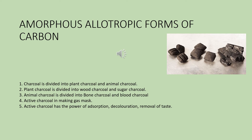Active charcoal: with special treatment, when absorbed hydrocarbons and layers of graphite are removed from the surface of charcoal, the porosity of charcoal increases greatly, and its capacity of absorbing gas increases. This type of charcoal is called active charcoal. Coconut shells soaked in zinc chloride (ZnCl₂) solution, when heated in the absence of air, produce active charcoal.